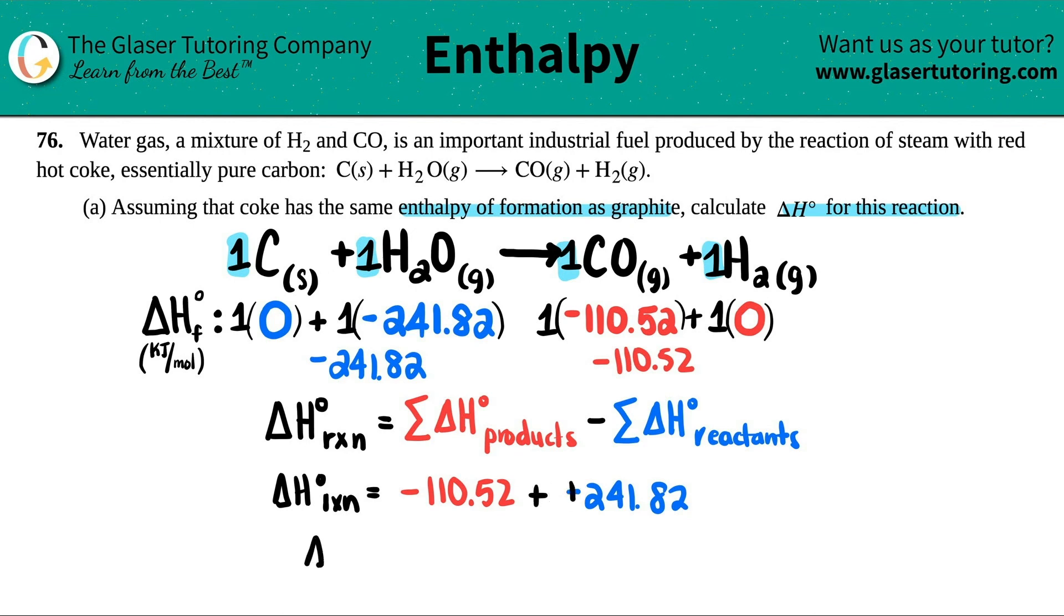And then keep-change-change, minusing by a negative—I mean, you could just do it as a plus a positive if that helps you in the calculator. But either way we will arrive at our destination. Okay, so I'm adding these up: negative 110.52 plus 241.82.